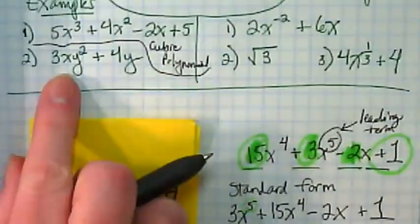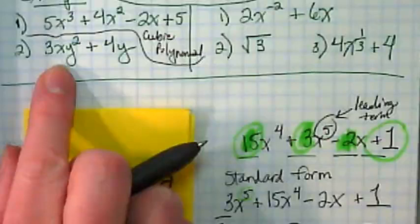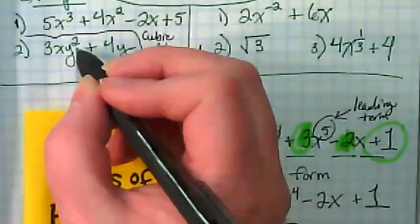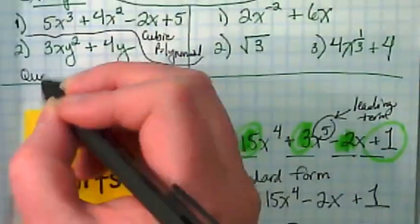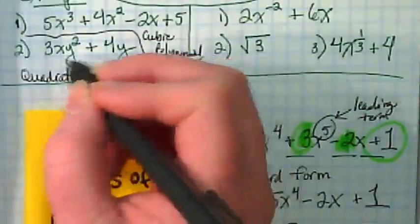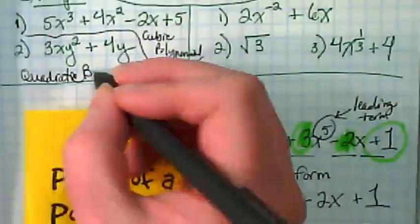What about my second example? Its highest power is a 2, so we would go with quadratic. How many terms does it have? So it's a quadratic binomial.